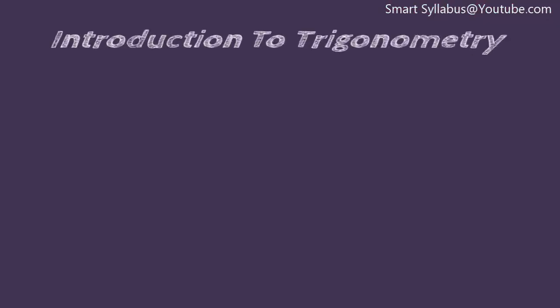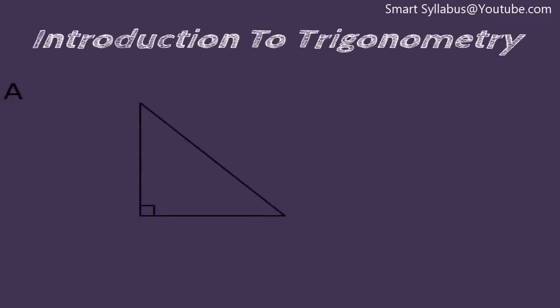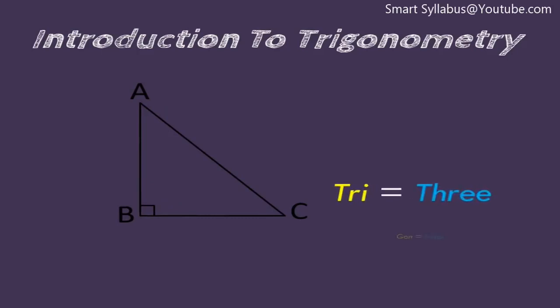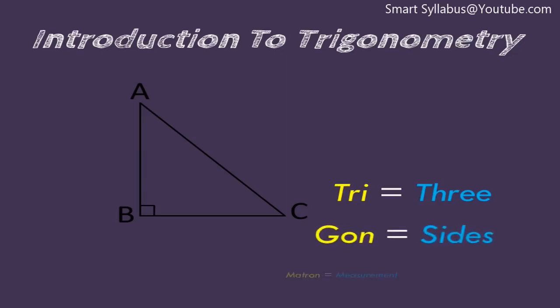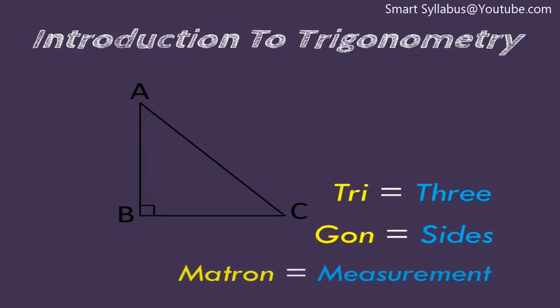Dear students, you have already studied about triangles, and in particular right angle triangles, in your earlier classes. Trigonometry completely depends upon the right angle triangle. The word 'trigonometry' means: 'tri' means three, 'gon' means sides, and 'metron' means measuring — that is, measuring the three sides of a triangle.